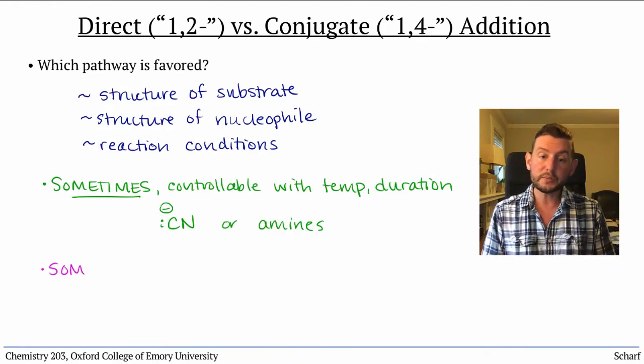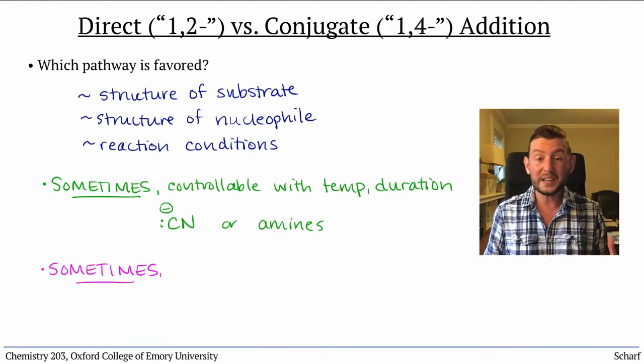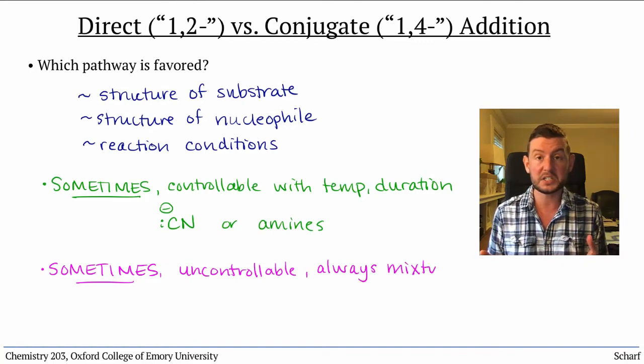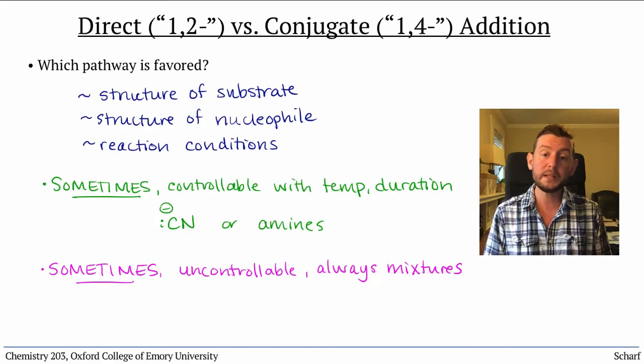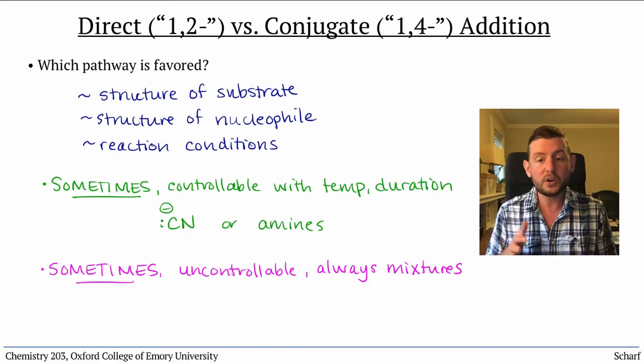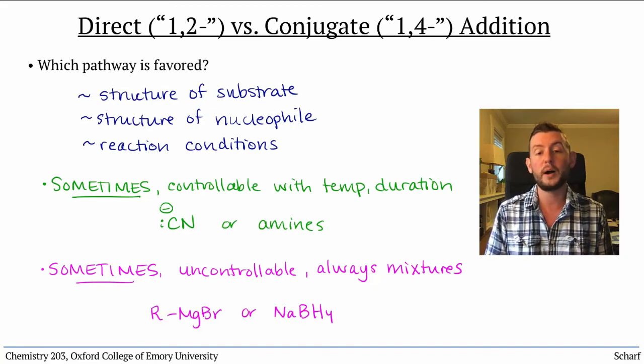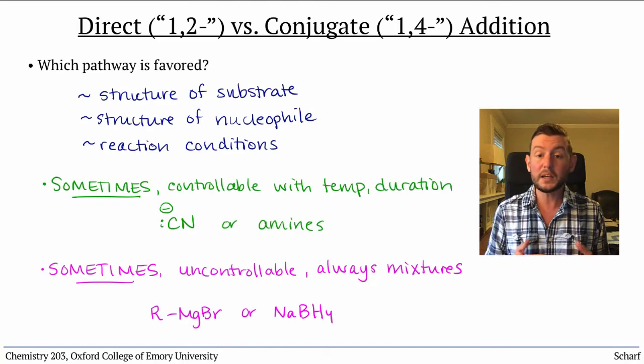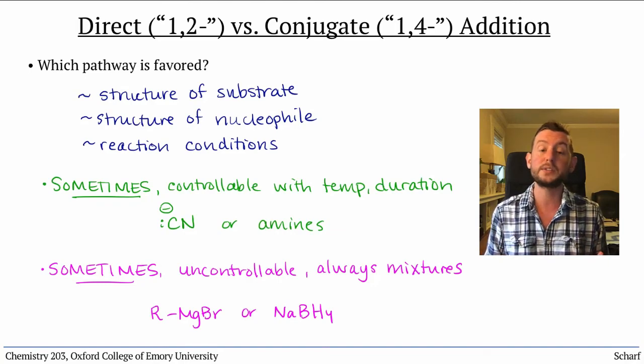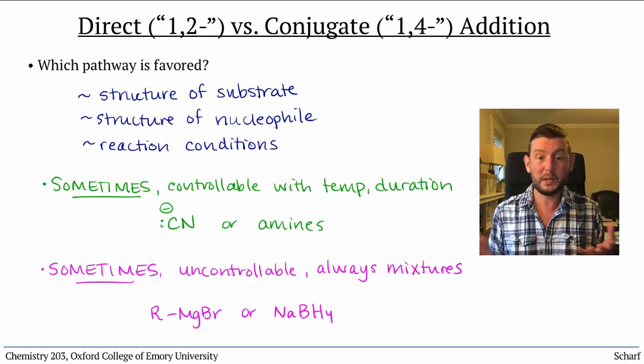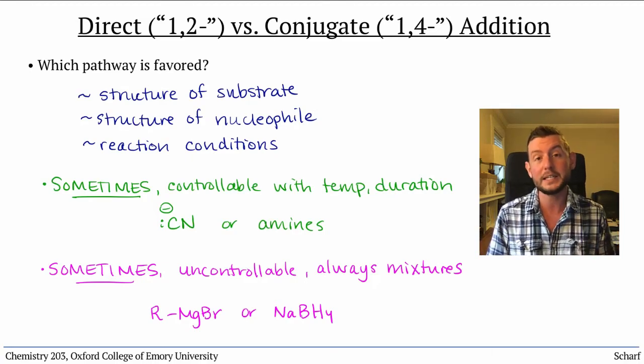In other circumstances, we almost always get mixtures of products no matter how we modify the reaction conditions. This typically occurs for moderately strong nucleophiles that are poor leaving groups, like Grignard reagents and sodium borohydride. We typically avoid using these nucleophiles on alpha-beta unsaturated carbonyl compounds because nobody wants to have to do column chromatography unless they really need to.